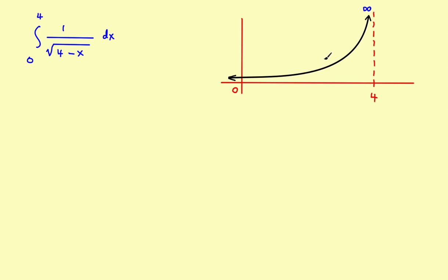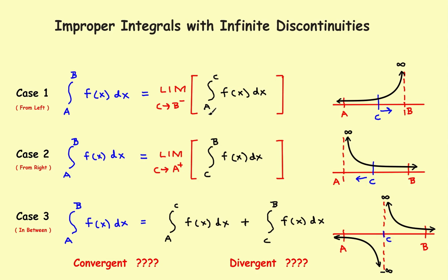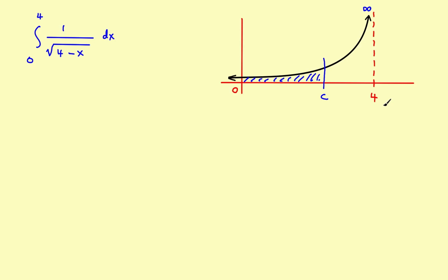We'll come in and pick some point in the middle, and find the definite integral from 0 to c, which gives us the area right in there. This is a two-step process. Step 1: find the integral from 0 to c — the definite integral there. This one's going to require u-substitution, so it'll take a little bit more work. We're just going to do the definite integral from 0 to c, just like we've done on previous problems.